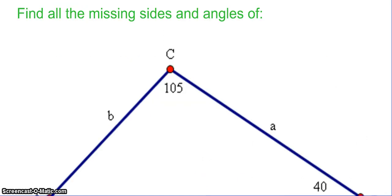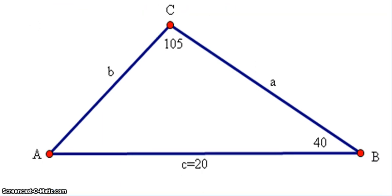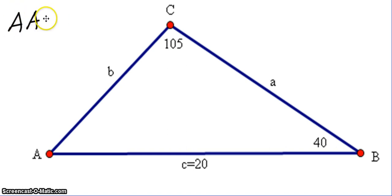Let's look at an example. If we want to find all of the missing sides and angles of this triangle, we know angle C is 105°, side c is 20, and angle B is 40°. This is our angle-angle-side scenario. Pause the video and use the law of sines to find the remaining sides and angle, then unpause to check your work.